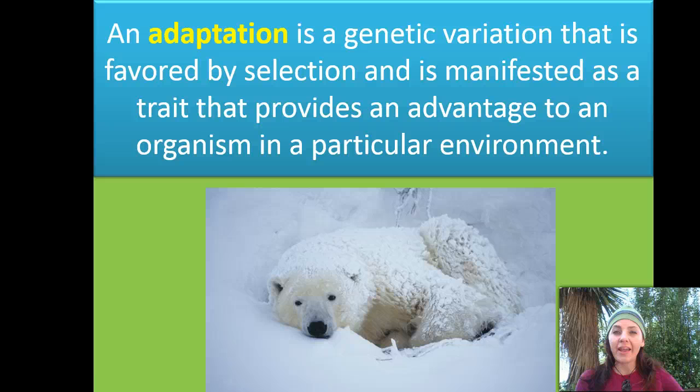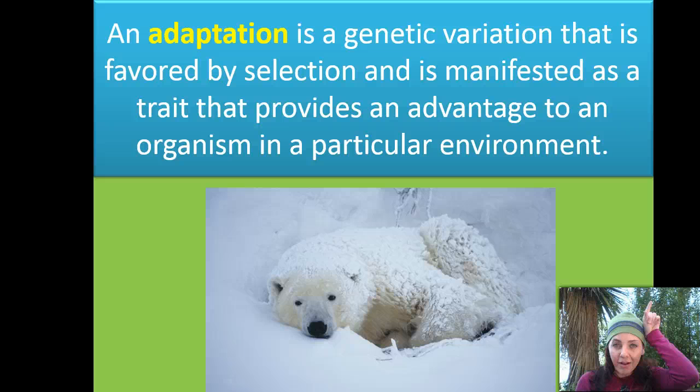The hare in the snow has white hair and smaller ears because it wants to conserve heat, whereas the hare found in the desert has long, pointy ears to get rid of heat, as well as long legs and a shorter fur coat.